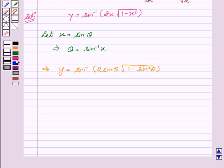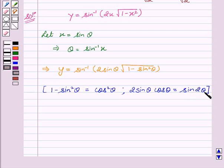As we know, 1 - sin² θ = cos² θ and 2 sin θ cos θ = sin 2θ. We will use these two identities, which implies y = sin^(-1)(2 sin θ cos θ).